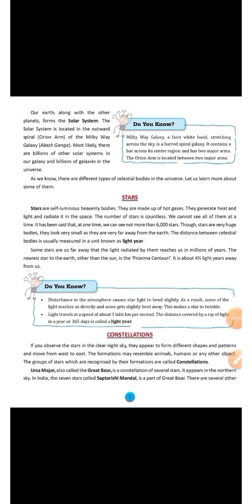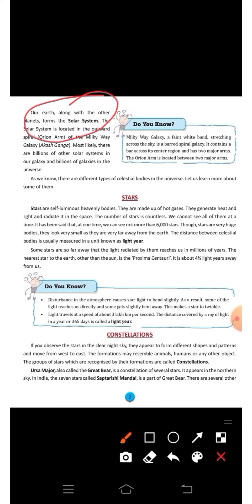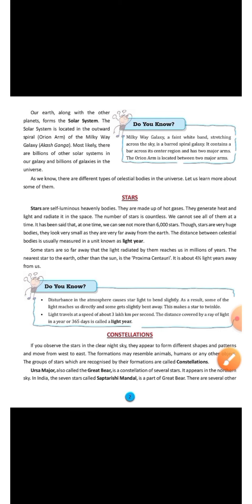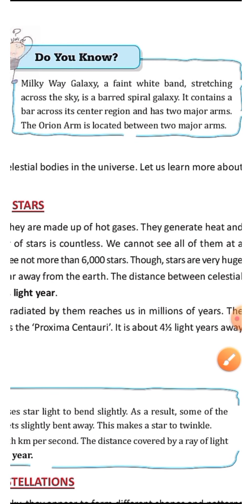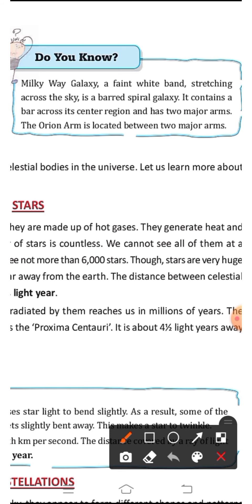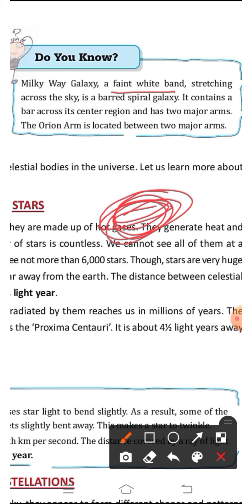Our Earth, along with the other planets, forms the solar system — the sun's family. Now let us read about the Milky Way Galaxy. Our solar system is a part of the Milky Way Galaxy. The Milky Way is a faint white band stretching across the sky. It is a barred spiral galaxy — spiral means it is arranged in a circular, spiral shape.